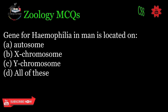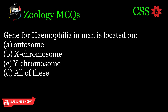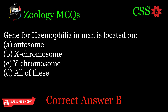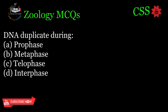Gene for hemophilia in man is located on: A. Autosome, B. X chromosome, C. Y chromosome, D. All of these. Correct answer: B.